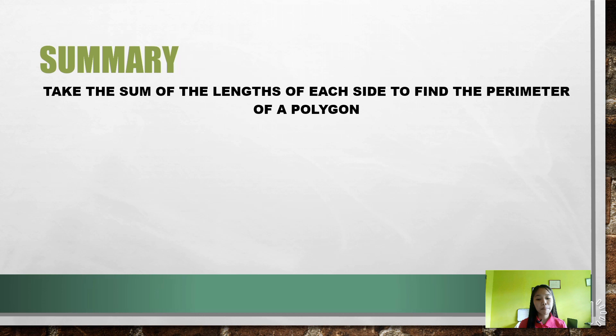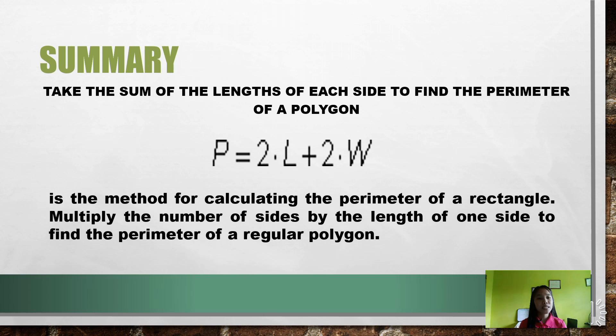To sum up our lesson: take the sum of the lengths of each side to find the perimeter of a polygon. P = 2L + 2W is the method for calculating the perimeter of a rectangle. Multiply the number of sides by the length of one side to find the perimeter of a regular polygon.